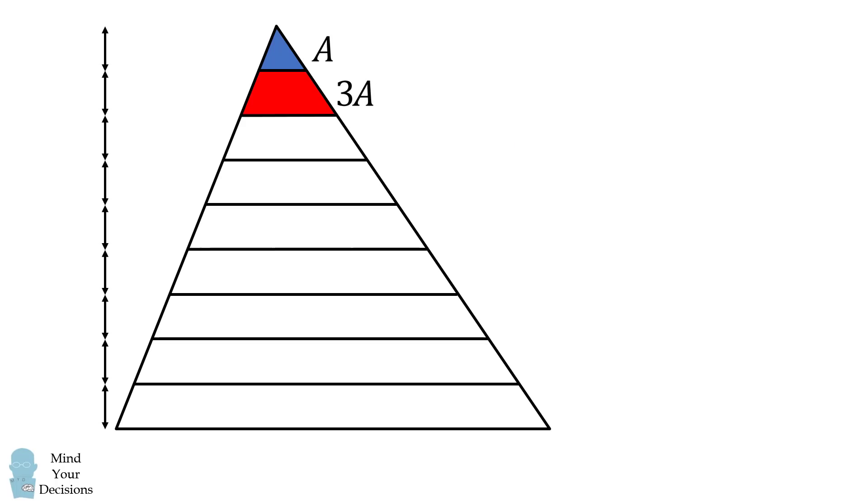Now there's another way that you could see the area of the red stripe. The smallest triangle has an area equal to A, and we can fit exactly three of these in this red stripe. Thus its area will be equal to 3A.